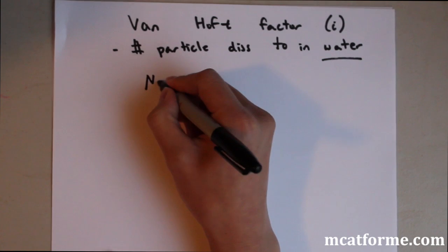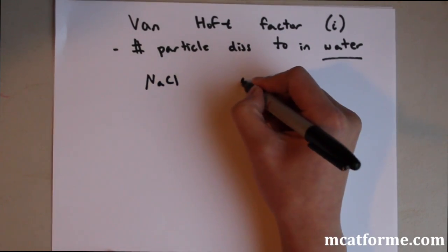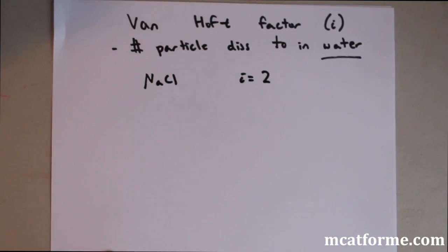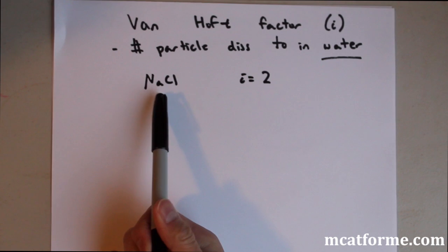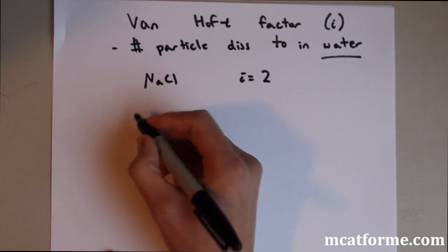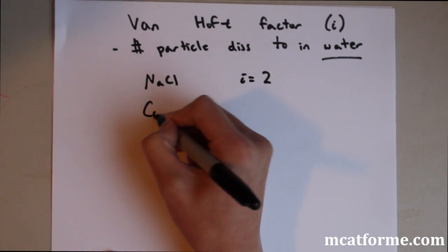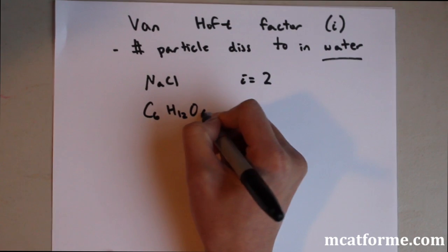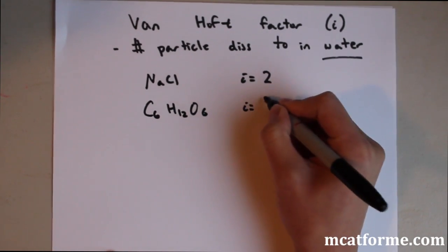So for example, we have NaCl. Its Van't Hoff factor is going to be two because NaCl dissociates into Na plus and Cl minus. If we have glucose, which is C6H12O6, its Van't Hoff factor is going to be one.